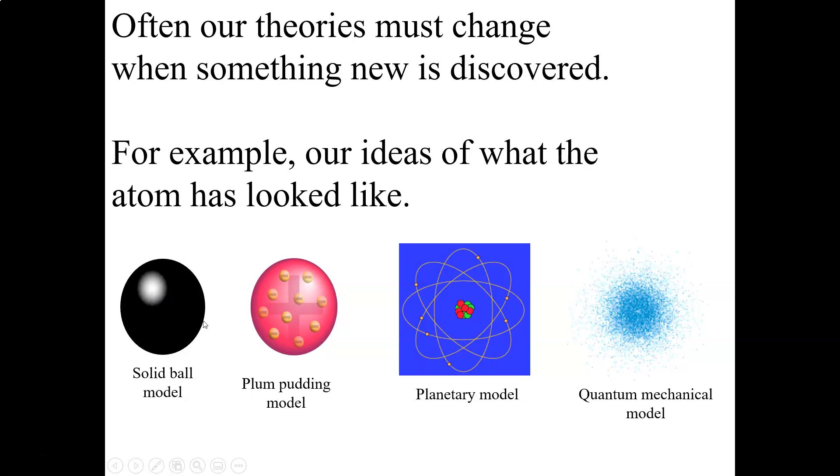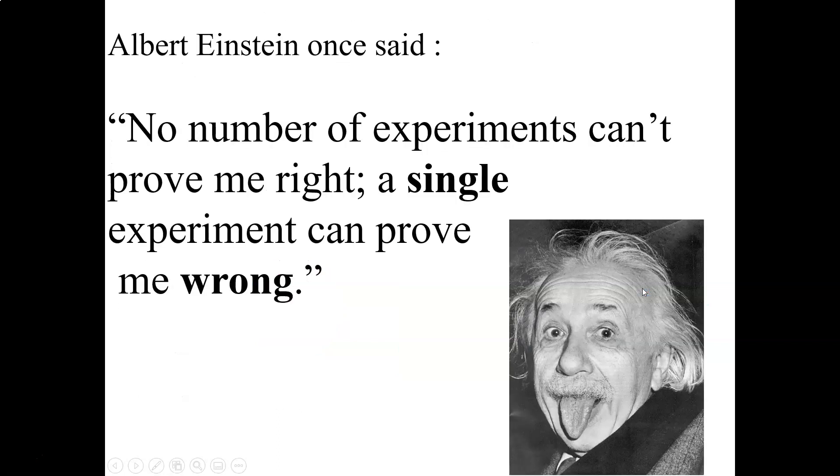Then the plum pudding model came about when we noticed that there must be electrons. And then later on, Rutherford, the gold foil experiment, they determined that there's a nucleus to the atom, the positive nucleus. And then later on, that model is changed to the quantum mechanical model, which is well beyond what we need to be going into this class, but interesting stuff nonetheless.